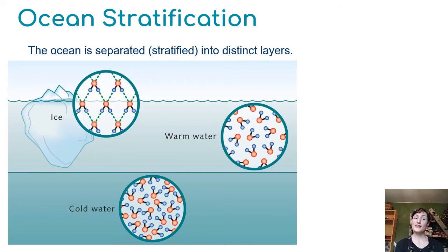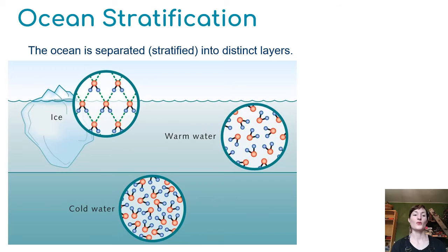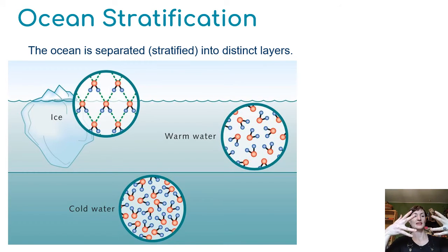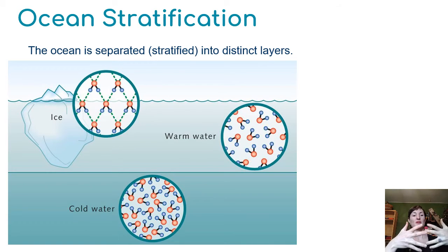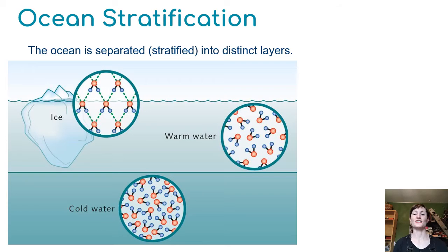If water gets really cold — cold enough to freeze — then weirdly, unlike most things whose solid state is more dense than their liquid state, water is different. When water freezes it makes a crystalline structure, and those molecules spread out and form a crystalline lattice, but they're farther apart than they are in cold liquid water. So ice is actually less dense than either warm water or cold water, and it floats on top.